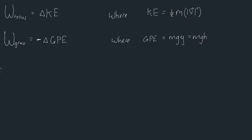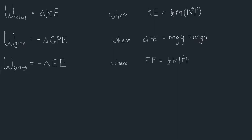We also found out in another previous video that the work done by a spring — the work done by the force of the spring acting on a particular object, W_spring — was also equal to the negative change in what we called elastic energy. Elastic energy was defined to be equal to one-half times your spring constant times the magnitude of your displacement from equilibrium, squared.